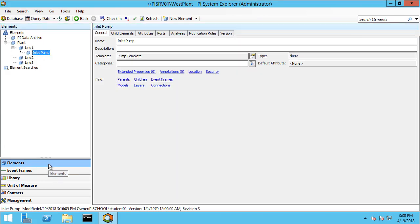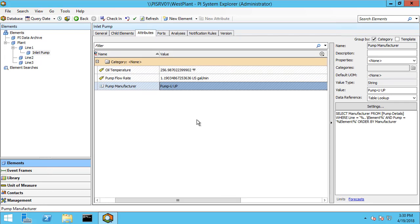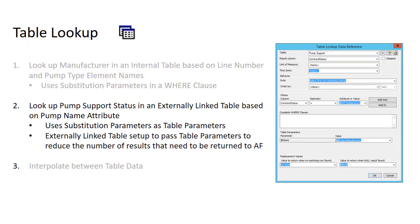Let's go back to the elements tab. We're on our inlet pump and sure enough, it brings in the correct manufacturer 'PumpYouUp' from the table. In our second example, let's go ahead and look up the status of our support contract with the PumpYouUp manufacturer. We're going to use the name of the pump manufacturer that we just pulled in and pass it to an externally linked table using parameterization.